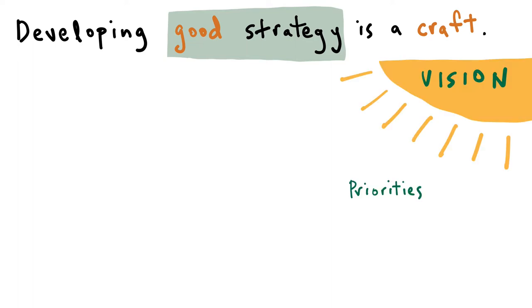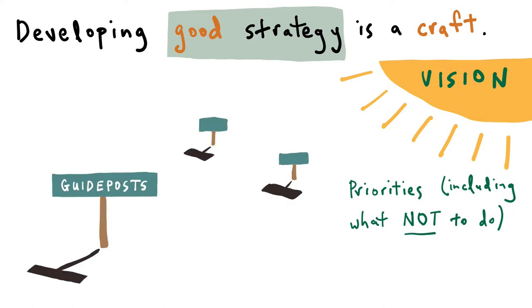A good strategy also provides principles or guideposts that help you make good decisions about how best to achieve your vision and priorities. Think of it as a kind of compass. These navigational aids are especially important in the heat of the moment, when stress and other factors may lead us to make moves that run counter to our longer-term goals.